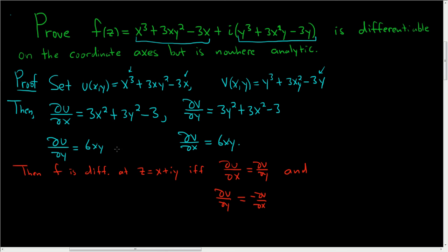Now these aren't exactly equal. Here we have 6xy, and here we have 6xy, but when you put a negative sign here, things change. So this happens if and only if 6xy is equal to the opposite of 6xy. So 6xy = -6xy. And this happens if and only if 12xy = 0, which happens if and only if x = 0 or y = 0. So the Cauchy-Riemann equations hold, and the partials are continuous, if and only if x = 0 or y = 0.